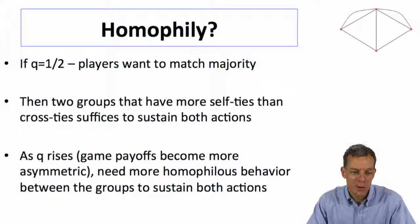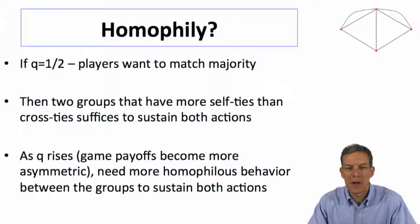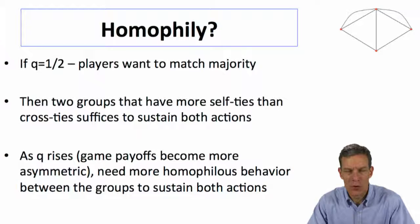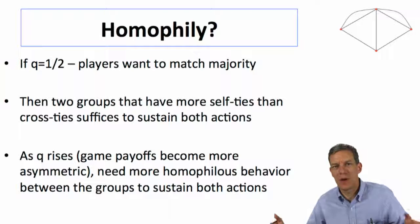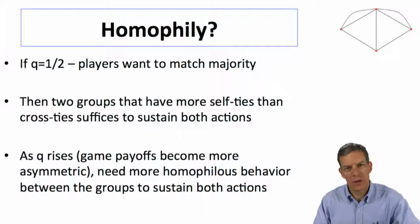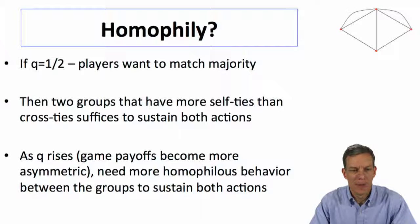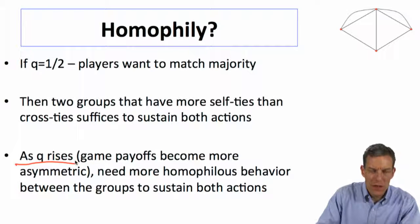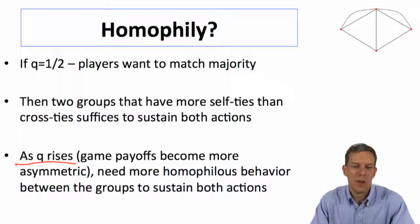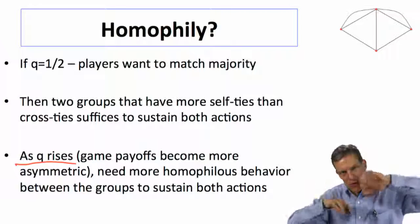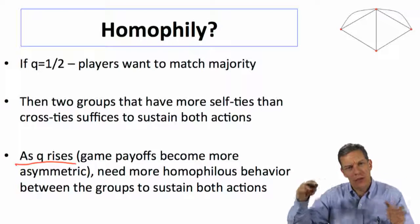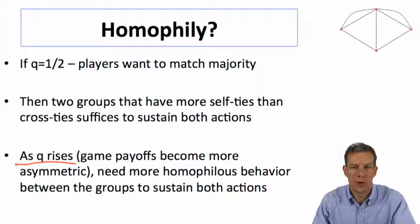This relates to homophily. If Q equals a half and players want to match the majority, two groups that have more self-ties than cross-ties is sufficient to sustain both actions in equilibrium. When Q rises — you need a higher fraction of friends in the set to want to play action one — you need more homophily, a stronger split in the structure. You need a group that is really highly cohesive in order to sustain both actions.